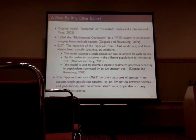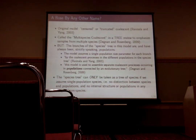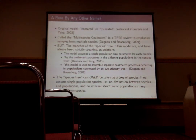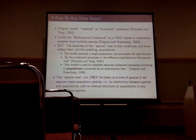Now, despite the term 'multi-species coalescent,' and despite the fact that there's a species tree produced by the model, it's important to bear in mind that the species tree is not a tree of species. This is self-evident when you look at the model — there's a single population parameter per branch. If you look at the careful and precise way Degnan and Rosenberg defined the model, it is used to assemble separate coalescent processes occurring in populations connected by an evolutionary tree. It's unambiguous: we're dealing with a tree of populations.